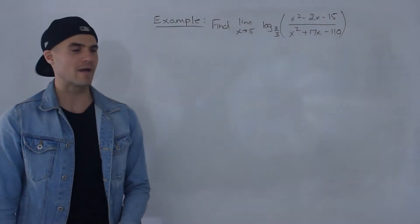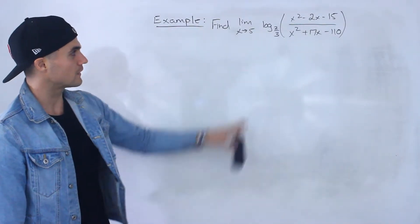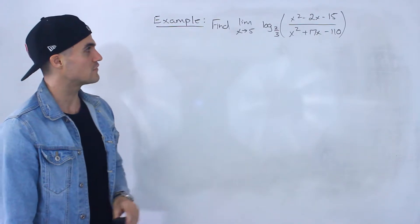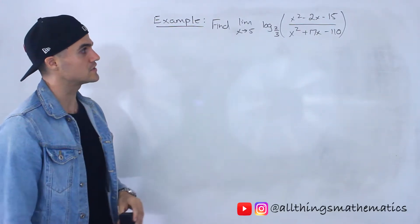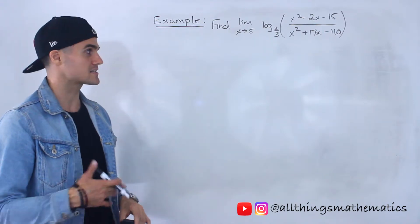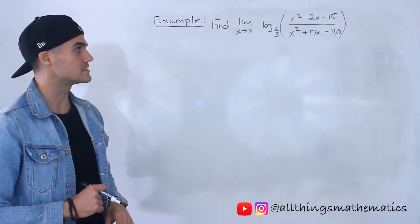What's up everyone? Patrick here. Welcome back. And in this question, what we've got to do, we've got to find this limit: limit as x approaches 5 of log base 2 over 3 of x squared minus 2x minus 15 over x squared plus 17x minus 110.